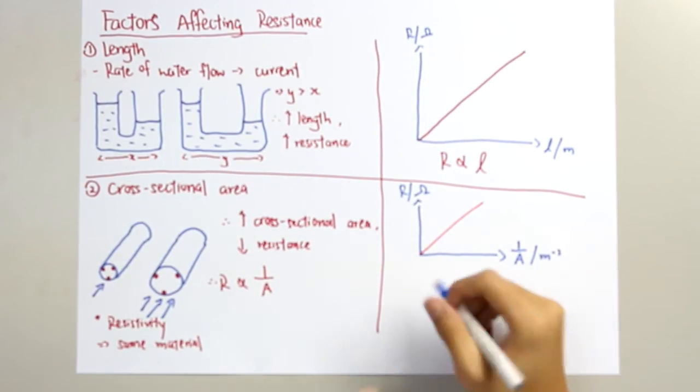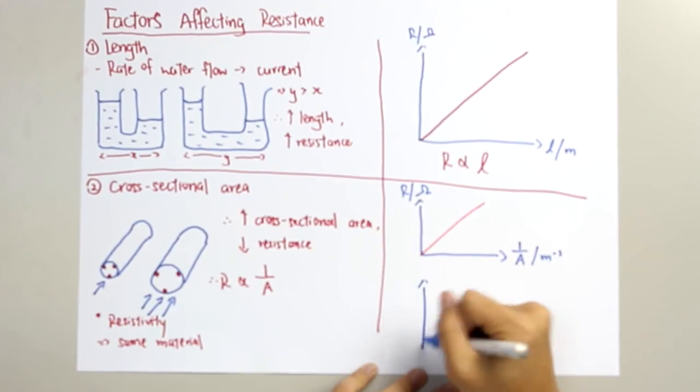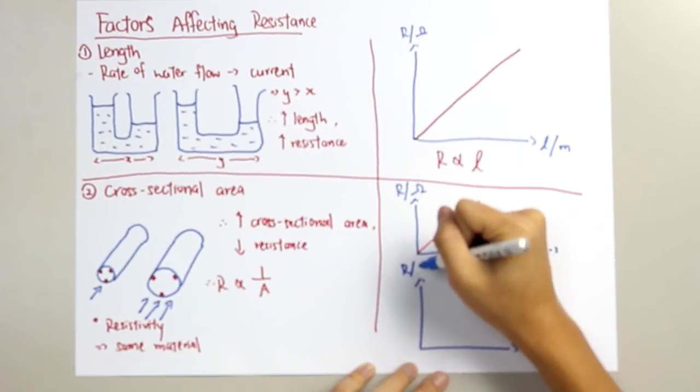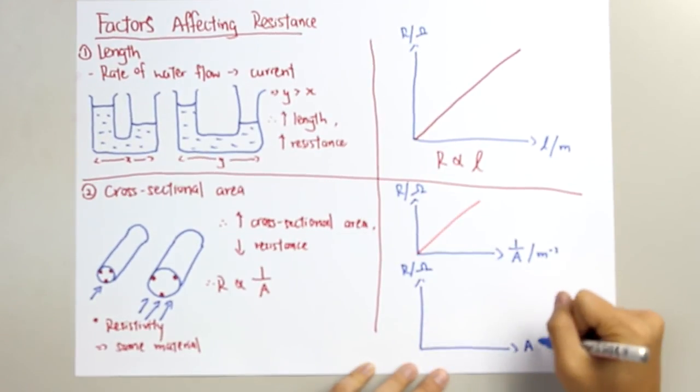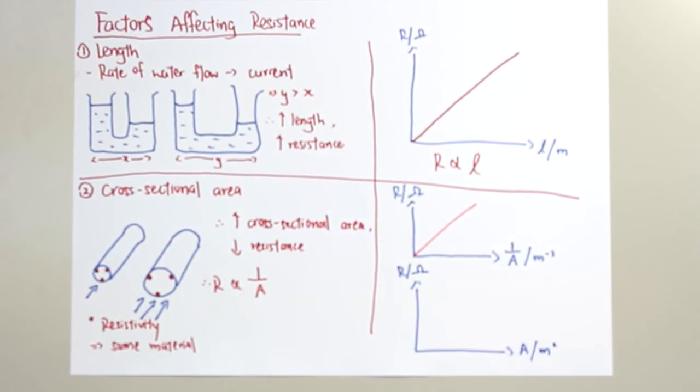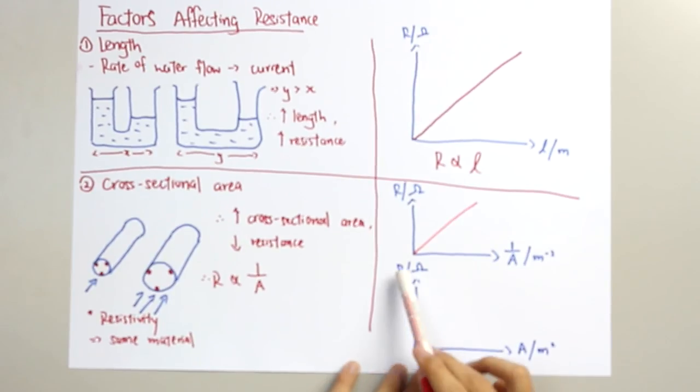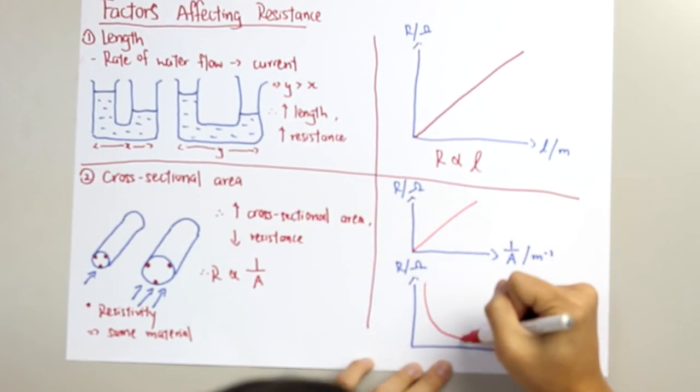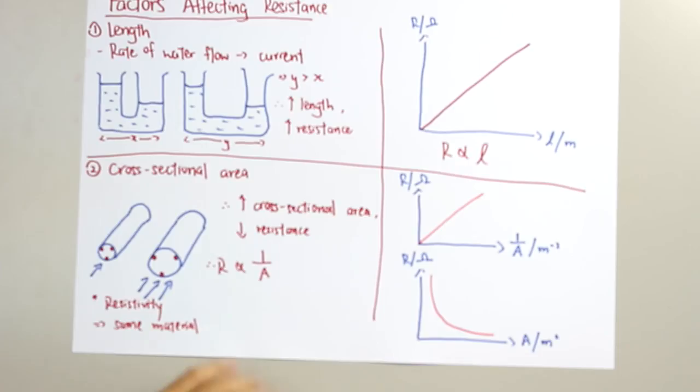Or the second way, the same, we label the y-axis as R and the x-axis as A. So, we said that R is inversely proportional to A, therefore, it should be a curved line like this.